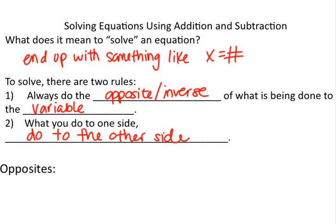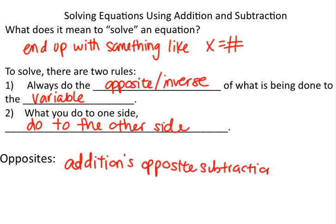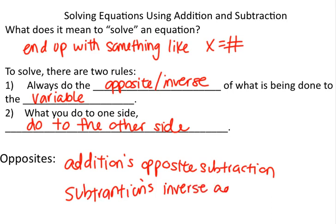Now, some opposites or inverses: addition's opposite is subtraction, and vice versa — subtraction's inverse or opposite is going to be addition. So if they're adding something to the variable, I'm going to subtract it; if they're subtracting it, I'm going to add it. Okay, so let's look at some problems.